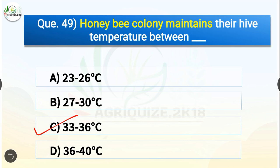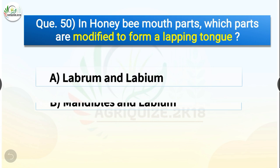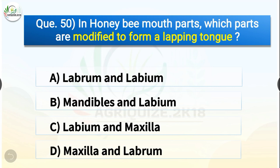Question number fifty: In honey bee mouthparts, which parts are modified to form a lapping tongue? The options are labrum and labium, mandibles and labium, labium and maxilla, or maxilla and labrum. The correct answer is option C — labium and maxilla. In honey bee mouthparts, labium and maxilla are modified to form a lapping tongue.